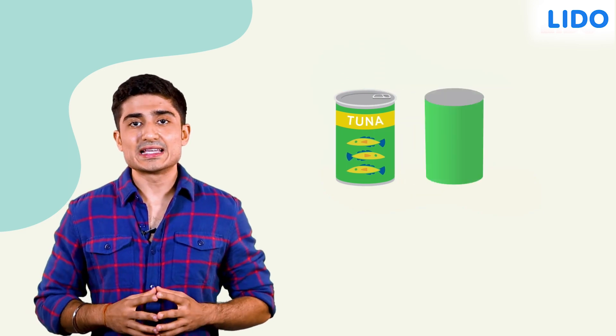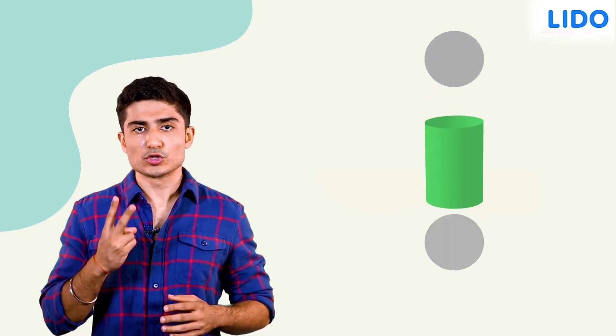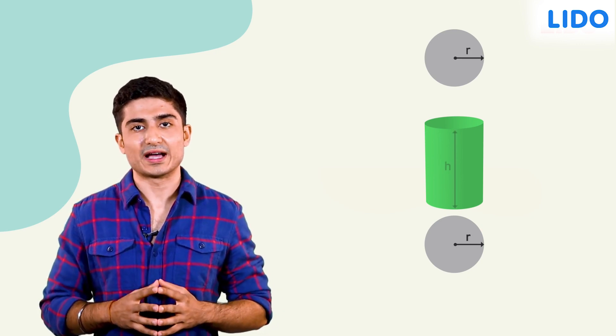Tuna cans are cylindrical in shape. Let's see what shapes the surface of a cylinder is made up of. A cylinder is made up of two flat circular surfaces of radius r and a curved surface of height h.